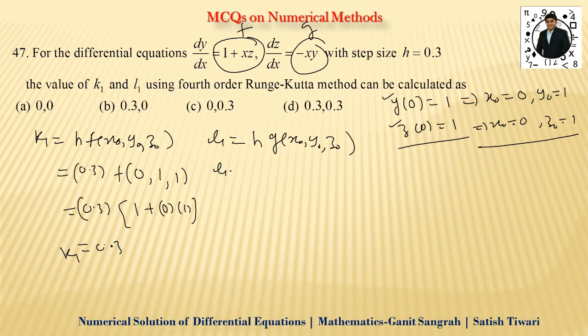Ab hum nikalte hai l1 ka value. l1 mein bhi h aapne 0.3 put kar diya. x0 aapko bata 0 hai, aur y0 1 hai, z0 bhi one hai. Yahan pe jaake it is 0.3. Ab function g ke hai minus xy. Minus xy matlab minus 0 into it is what, y. Toh y kitna hai jaake it is what, 0. Toh 0 into 0.3 again it is what, 0. Toh l1 mera hai jaake it is what, 0. Toh k1 is 0.3, l1 is 0.